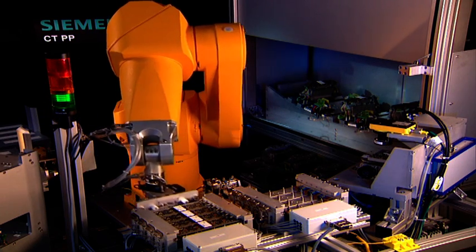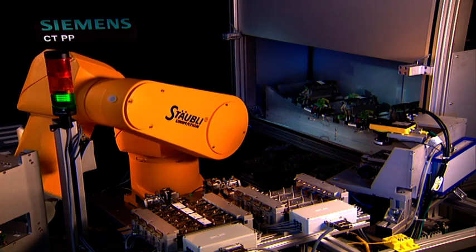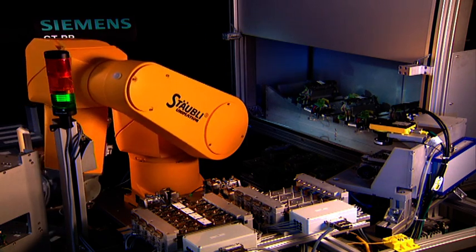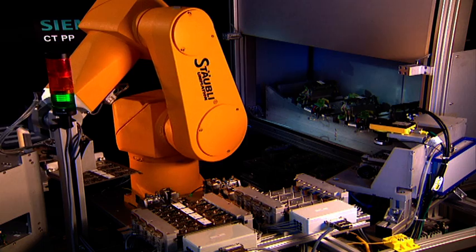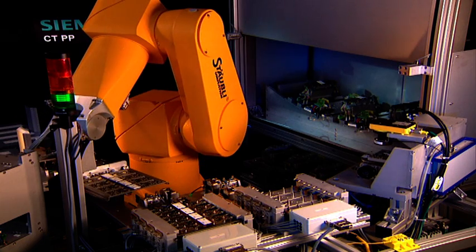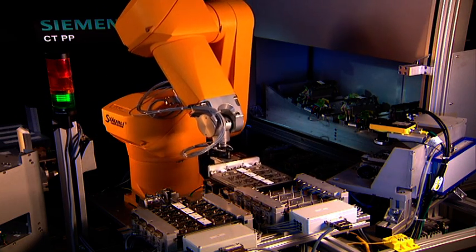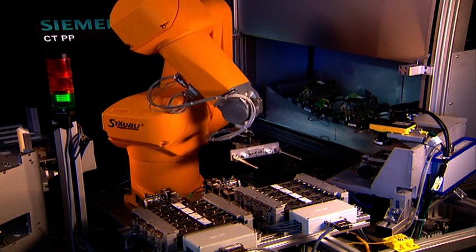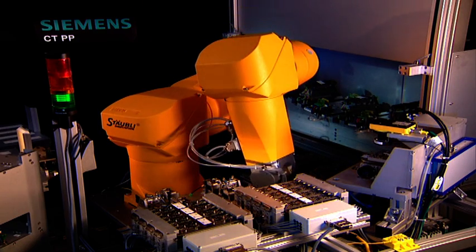Die Sensorboards werden automatisch von einem sechsachsigen Gelenkroboter aus einem Werkstückträger entnommen und nach durchgeführter Prüfung in Paletten abgelegt. Die Anlage wird vor dem Start manuell bestückt und kann dann vollautomatisch einen kompletten Auftrag abarbeiten.